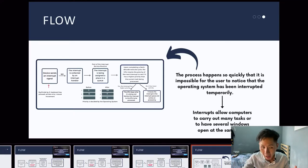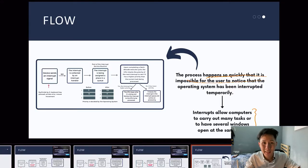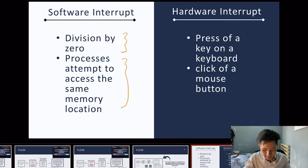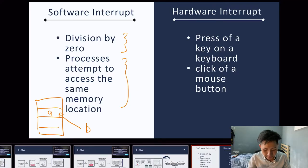This process happens so quickly — a computer can process billions of instructions per second — that it is impossible for the user to notice the OS has been interrupted. Interrupts allow computers to carry out many tasks at the same time; they can be sent at any time and will be executed if they have a higher priority. You also need to distinguish between software interrupts — such as division by zero or attempting to access the same memory location — and hardware interrupts, such as pressing a key on the keyboard or clicking the mouse button.